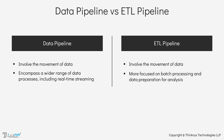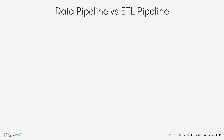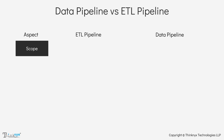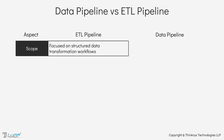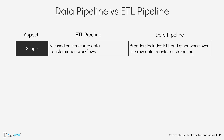Let's understand the differences on the basis of different aspects. The first aspect is scope. ETL Pipeline is focused on structured data transformation workflows. On the other hand, data pipeline is broader and includes ETL and other workflows like raw data transfer and streaming.